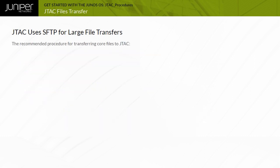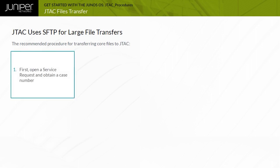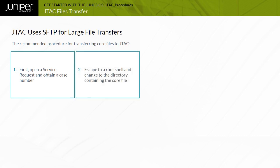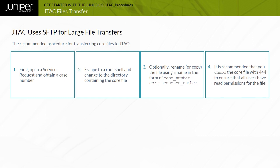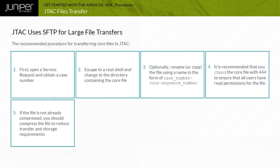The recommended procedures for transferring core files to JTAC are as follows. Step 1: Open a service request and obtain a case number. Step 2: Escape to a root shell and change to the directory containing the core file. Step 3: Optionally rename or copy the file using a name in the form of Case Number, Core Sequence Number. Step 4: It is recommended that you chmod the core file with 444 to ensure that all users — root, owner, and other — have read permissions. Step 5: If the core file is not already compressed (indicated by a .tgz or .gz extension), compress the file to reduce transfer and storage requirements — this is especially important for the VMCore.0 file associated with a kernel crash, as this memory image file can be quite large.